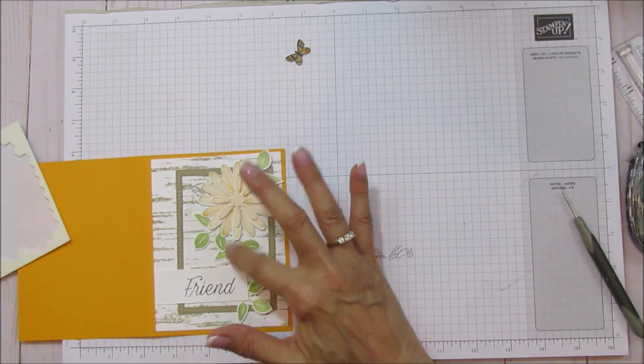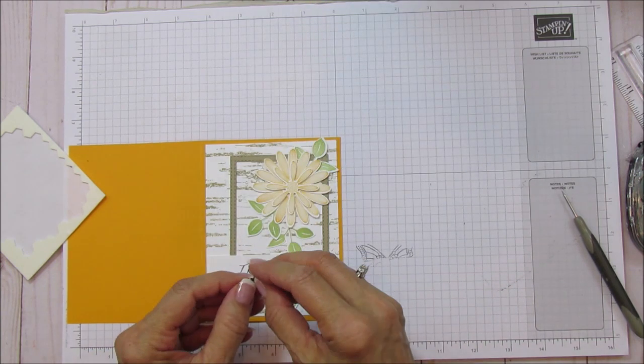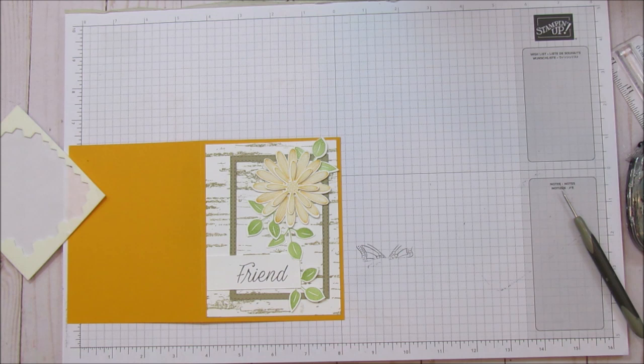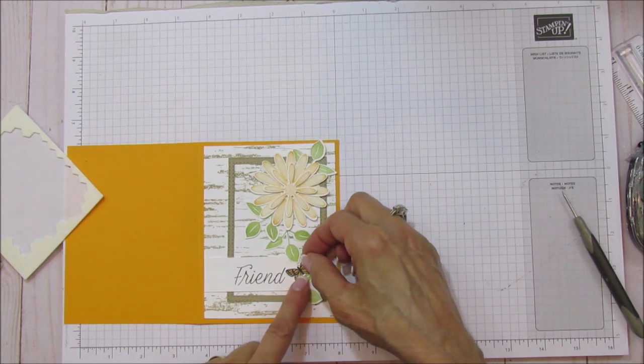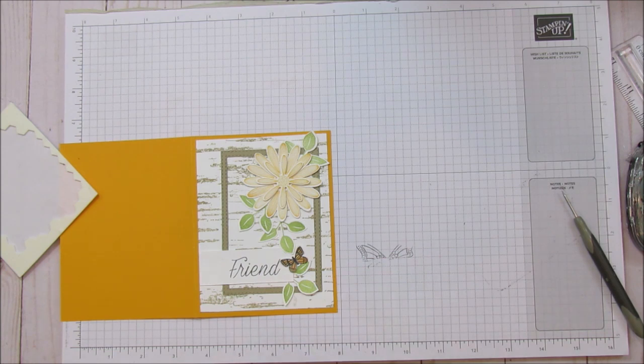You can even add an embellishment here if you like something in the center. I just thought it was pretty without it. So I didn't want to add too much bling because there's a lot going on. So I'm going to use a glue dot for the butterfly. And we're going to put that one right here. And that is it.